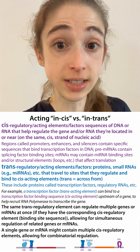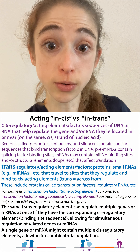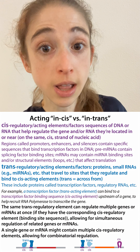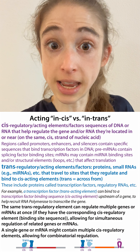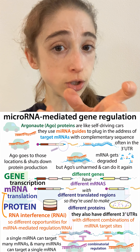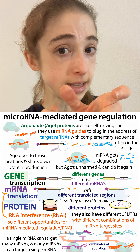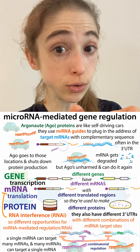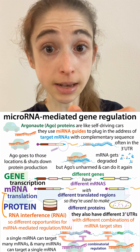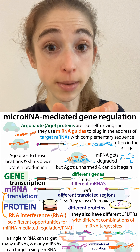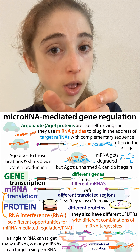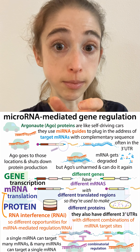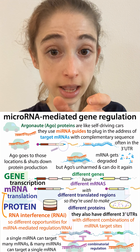You can also have cis acting and trans acting regulatory elements at the messenger RNA level. For example, micro RNAs are short RNAs that are bound by a protein called Argonaute. Argonaute then goes and binds to sequences in messenger RNAs that are complementary to that small RNA, and it then shuts down the production of protein from those messenger RNAs.